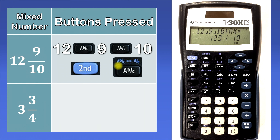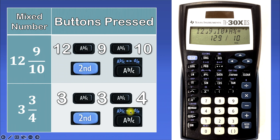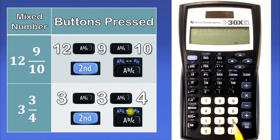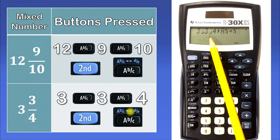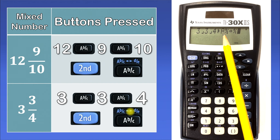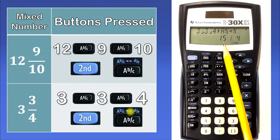And finally, 3 and 3 over 4. First we'll hit 3, then ABC, then 3, then ABC, then 4. That will give us the mixed number 3 and 3 over 4. Then we'll hit the second button and ABC one more time. So let's try that in the calculator: 3, ABC, 3, ABC, 4, 2nd, and then we'll hit ABC one more time. The calculator is going to take this and convert it from a mixed number into an improper fraction. We'll hit enter, and that will give us the improper fraction 15 over 4.